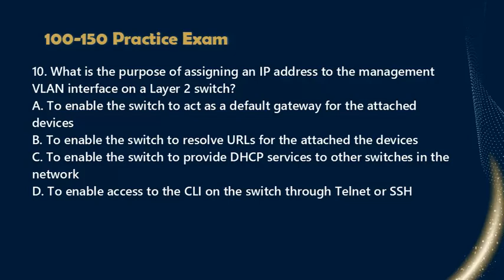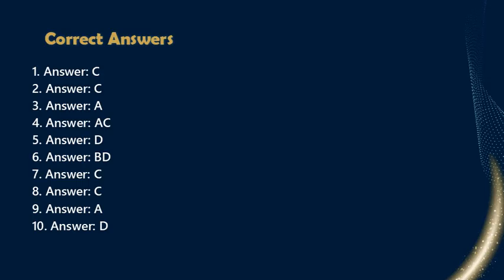Question 10: What is the purpose of assigning an IP address to the management VLAN interface on a Layer 2 switch? a. To enable the switch to act as a default gateway for the attached devices, b. To enable the switch to provide DHCP services to other switches in the network, c. To enable access to the CLI on the switch through Telnet or SSH. Check the correct answers.